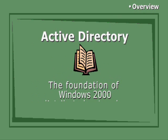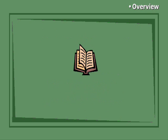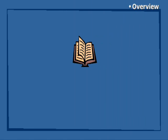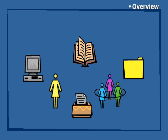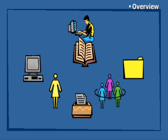Active Directory is the directory service used in Windows 2000. A directory service stores information about all the resources on a network, such as users, groups, computers, files, printers, and applications. Plus, it provides all the services that make the information available and useful.